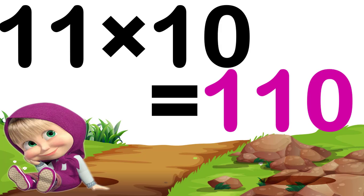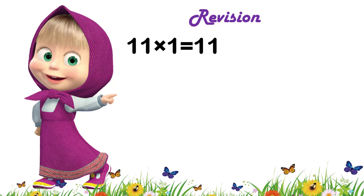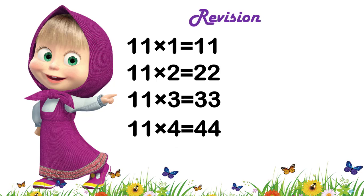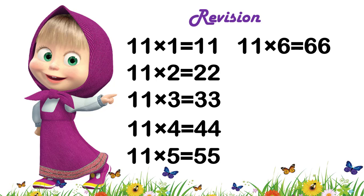Now children, let's quickly revise the table. 11 1s are 11. 11 2s are 22. 11 3s are 33. 11 4s are 44. 11 5s are 55.